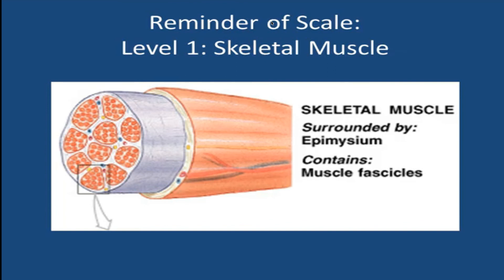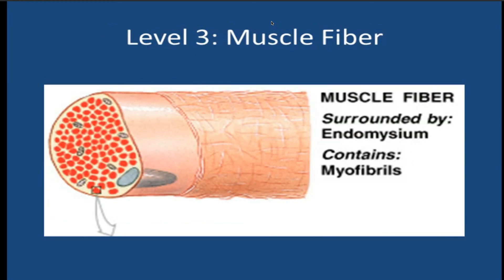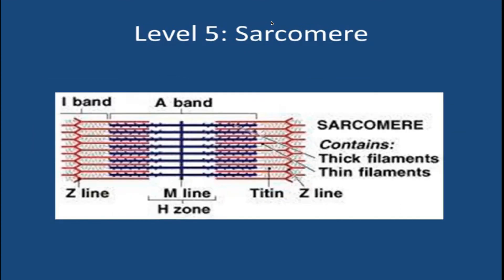One last point about the sliding filament model: when a sarcomere contracts, the Z-lines move closer together and the I-band becomes smaller. The A-band always stays the same width. At full contraction, the thin and thick myosin filaments overlap. To recap the scale of skeletal muscle: the skeletal muscle is surrounded by the epimysium and contains muscle fascicles; the muscle fascicle is surrounded by the perimysium and contains muscle fibers; the muscle fiber is surrounded by the endomysium and contains myofibrils; the myofibril is surrounded by the sarcoplasmic reticulum and consists of sarcomeres (Z-line to Z-line); and the sarcomere itself contains thick filaments, thin filaments, and all associated structures.